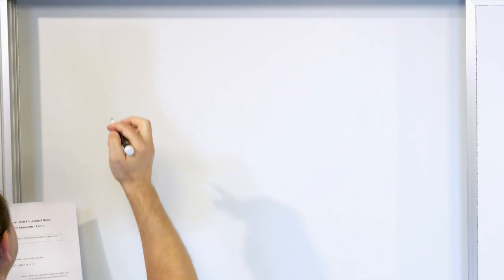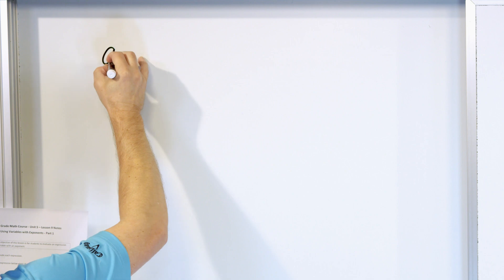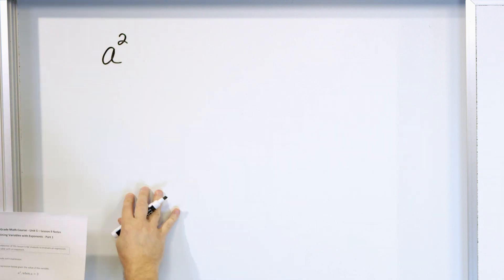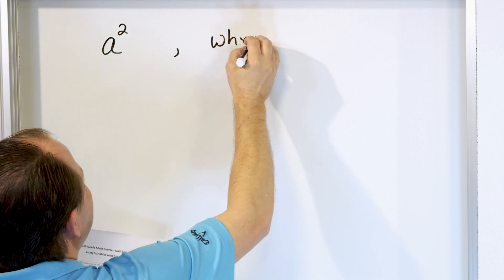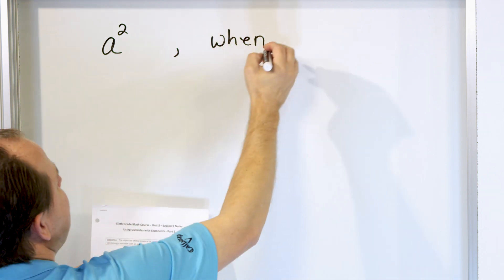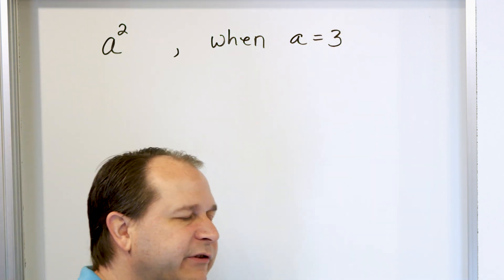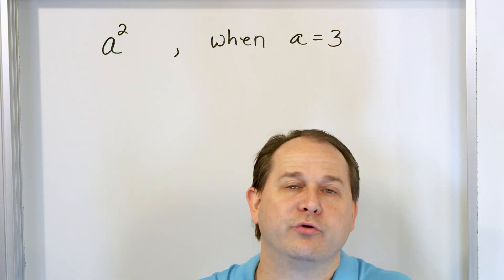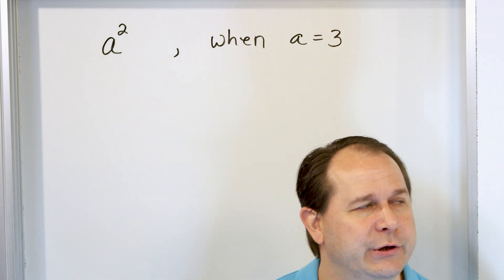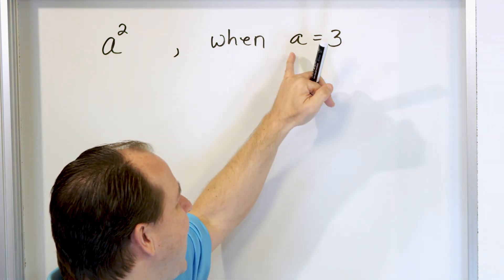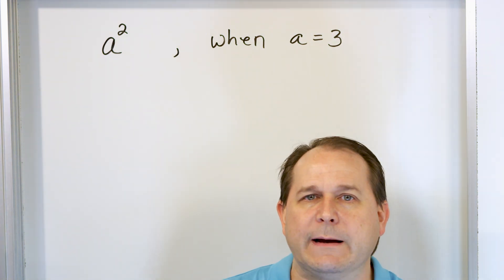All I want you to do, for instance, is calculate the value of the variable A squared, and I'm going to tell you what the value of A is. A is equal to 3. Remember, a variable is just a letter that often we don't know what it is. So in this case, I'm telling you that the value of the variable A is 3.